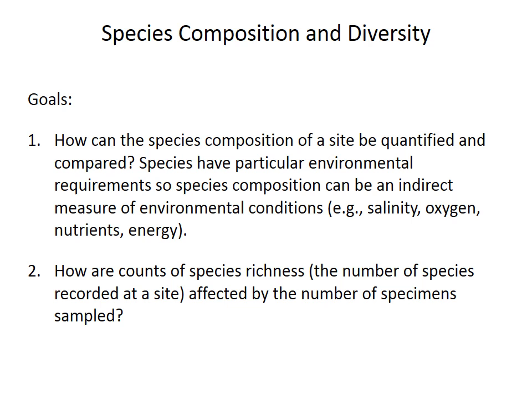This is important because species have particular environmental requirements, so we can use the abundance of species at a site as an indirect measure of environmental conditions, or a proxy for environmental conditions, such as salinity or oxygen, when we lack direct measurements. This would be true for all fossil assemblages when we have the species composition, but there is no way of directly measuring salinity or oxygen levels in the water in the past.